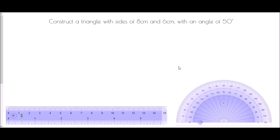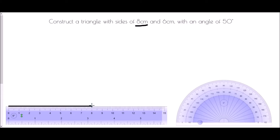We're going to begin by constructing a triangle with sides of 8 centimeters and 6 centimeters with an angle of 50 degrees. For this we're going to need a ruler and a protractor. The ruler is there so that we can draw the base of our triangle. My suggestion would always be that whichever is the longest side you've been given, you use that as the base, so I'm going to draw a line which is 8 centimeters long. There we go — that is going to be the base of my triangle.